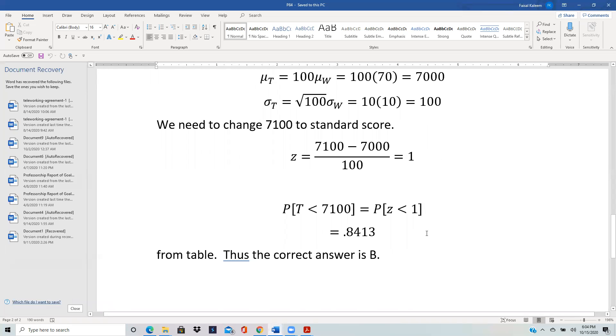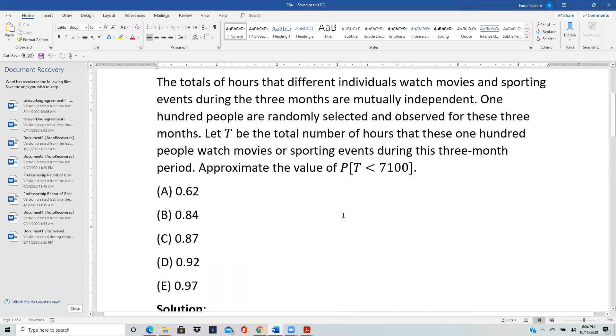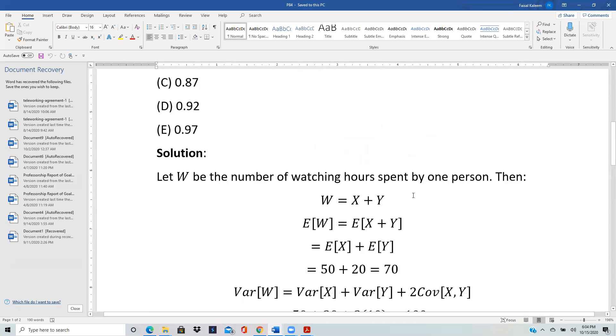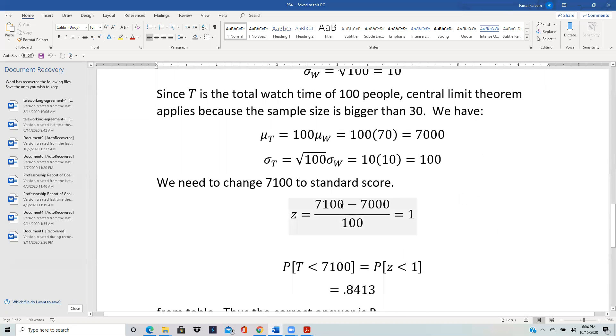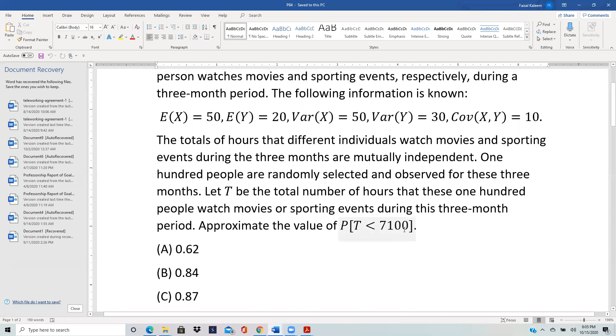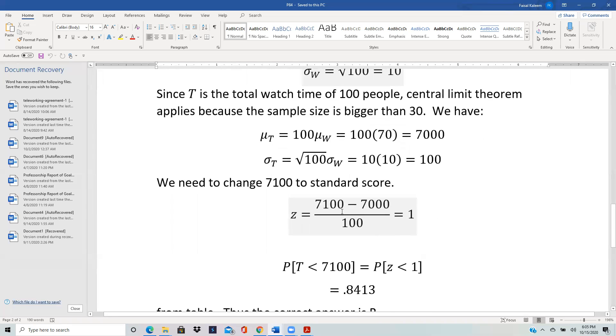Now let me return to an earlier problem. Let's say this one. So there the question was we had to calculate T is less than 7100, and we did not apply the correction and we just got the z score for 7100, and we got that to be one. So let's say we had applied the correction over there. Less than 7100 would mean less than 7100.5. So if we had used 7100.5 here, we would get 7100.5 divided by 100, which would be 1.005, and that is so close to one that it would have made very little difference if you had done that.